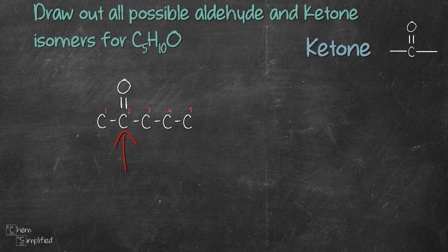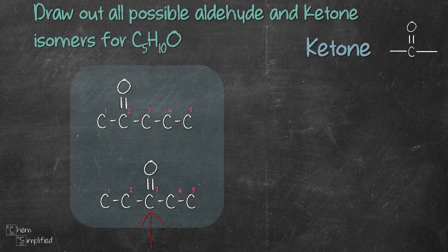Let's keep working with this five carbon chain and now we will move the carbonyl group to C3. That will give us another isomer. If we were to move the carbonyl group to carbon 4 it will actually be the same as the first structure. So let's move on to the four carbon chain now.